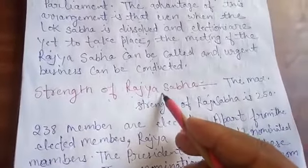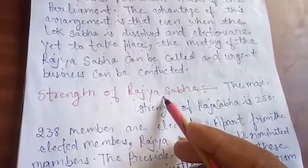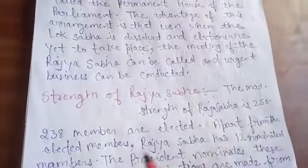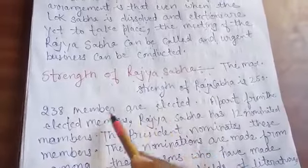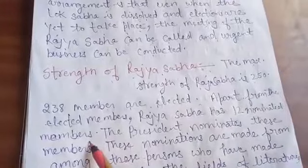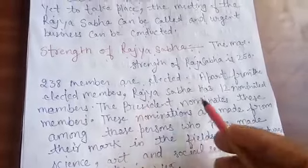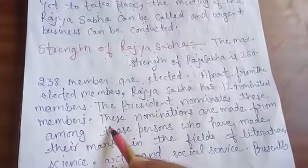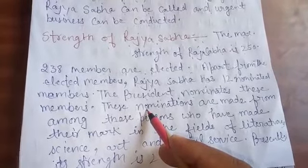What is the strength of the Rajya Sabha? How many members are there in Rajya Sabha? According to the Constitution, the maximum strength of Rajya Sabha is 250. Out of these, 238 members are elected from the states. Apart from these elected members, there are 12 nominated members also. These 12 nominated members are nominated by the President.